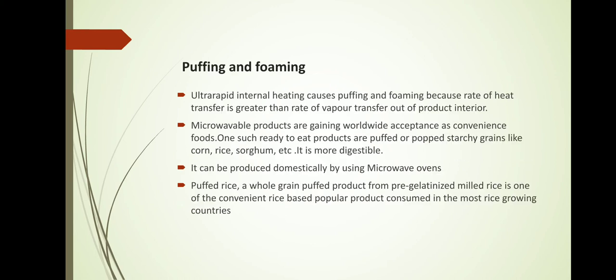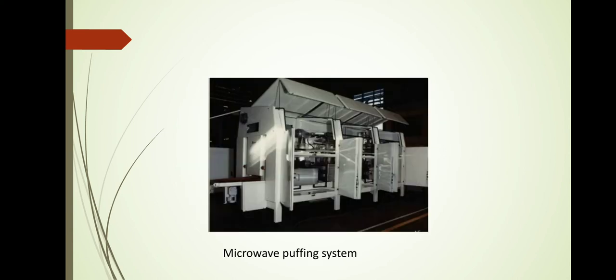The next application is puffing and forming. Ultra-rapid internal heating due to microwaves causes puffing and forming because the rate of heat transfer is greater than the rate of vapor transfer out of the product. Microwavable products are recognized worldwide as convenience food. Ready-to-eat puffed products include popular starchy grains like corn, rice, and sorghum, which are more digestible. They can be produced domestically using microwave ovens. A whole grain puffed product from pre-gelatinized and milled rice is one of the popular rice-based products consumed in most rice-growing countries.